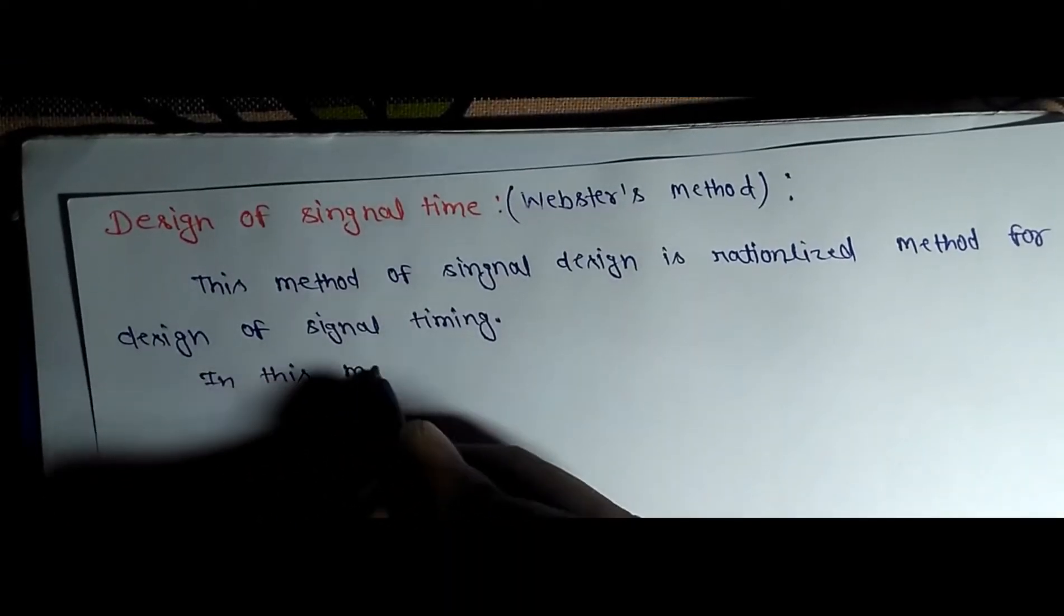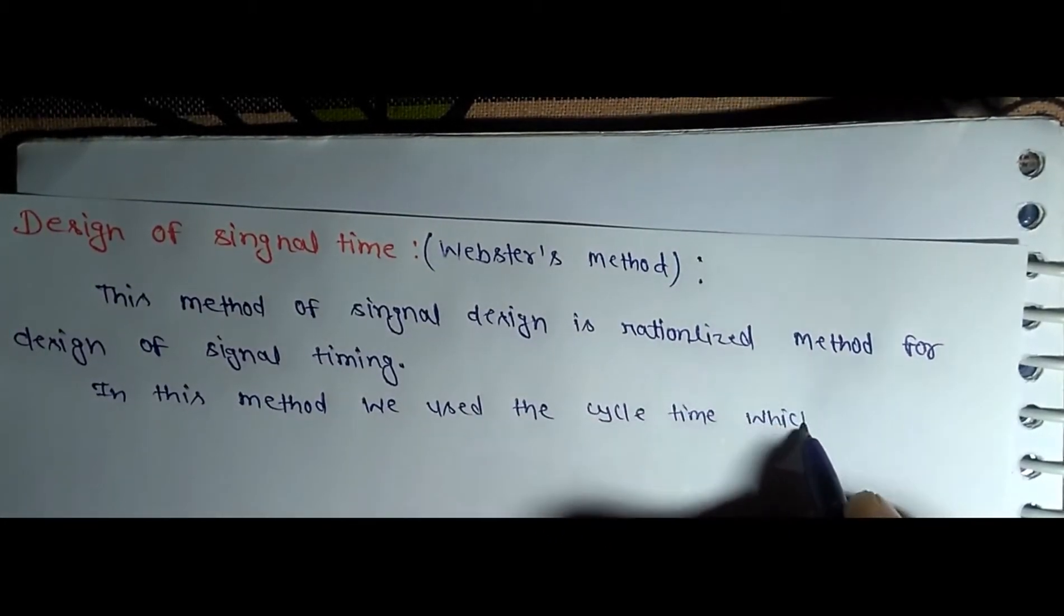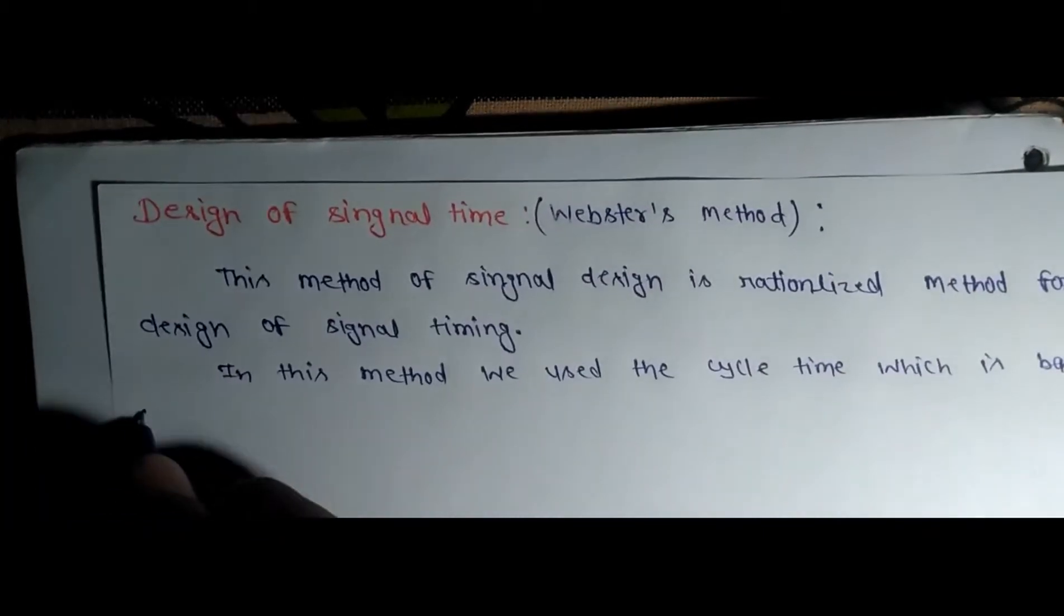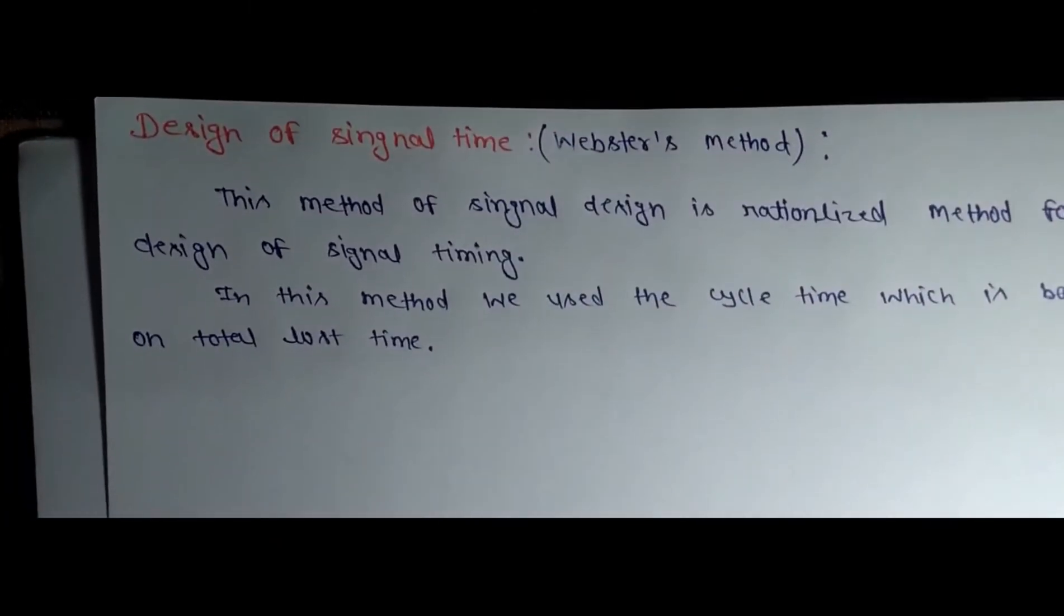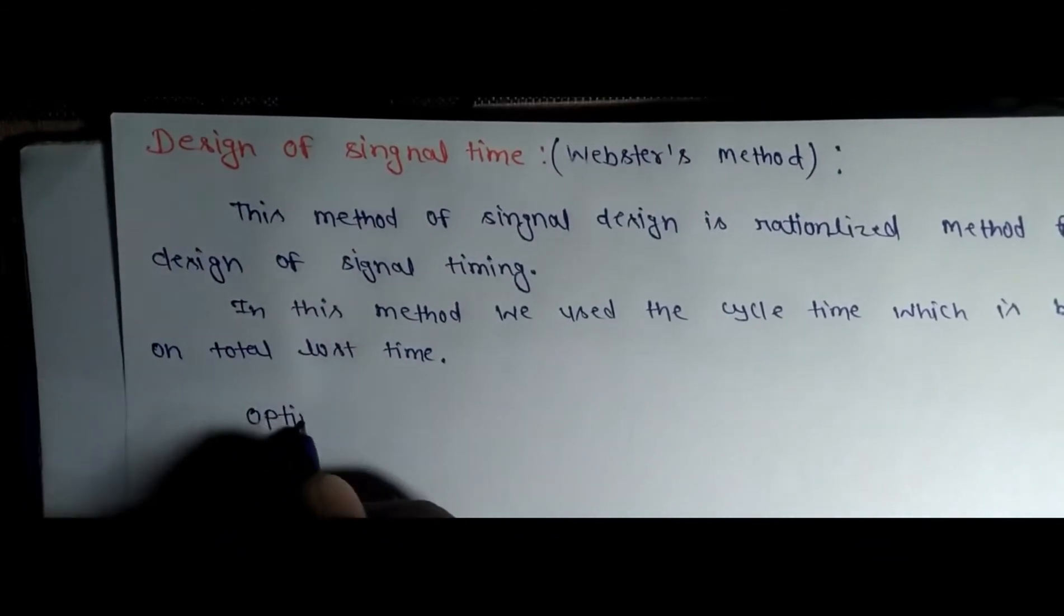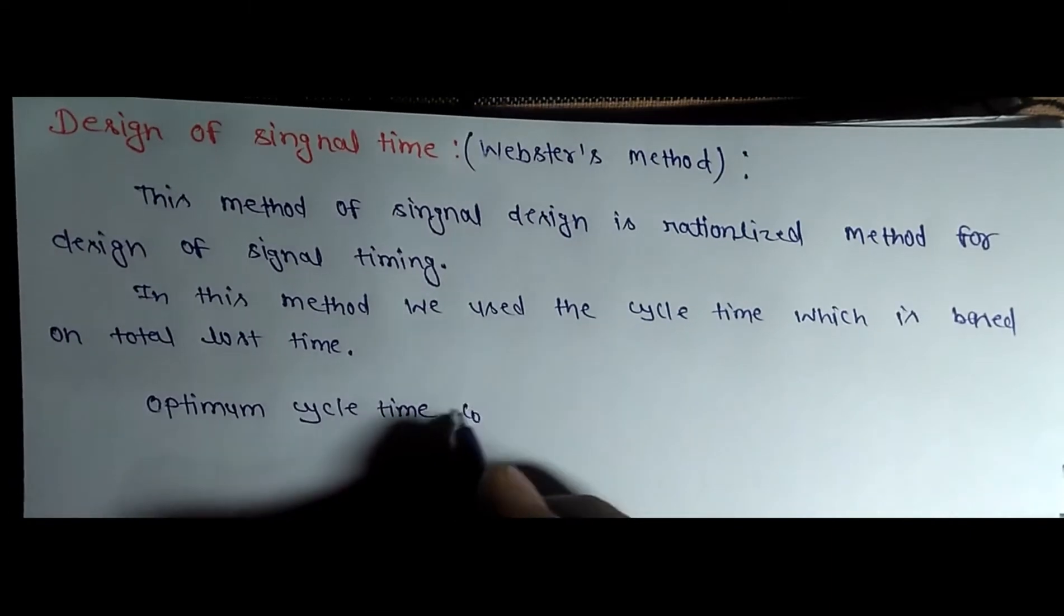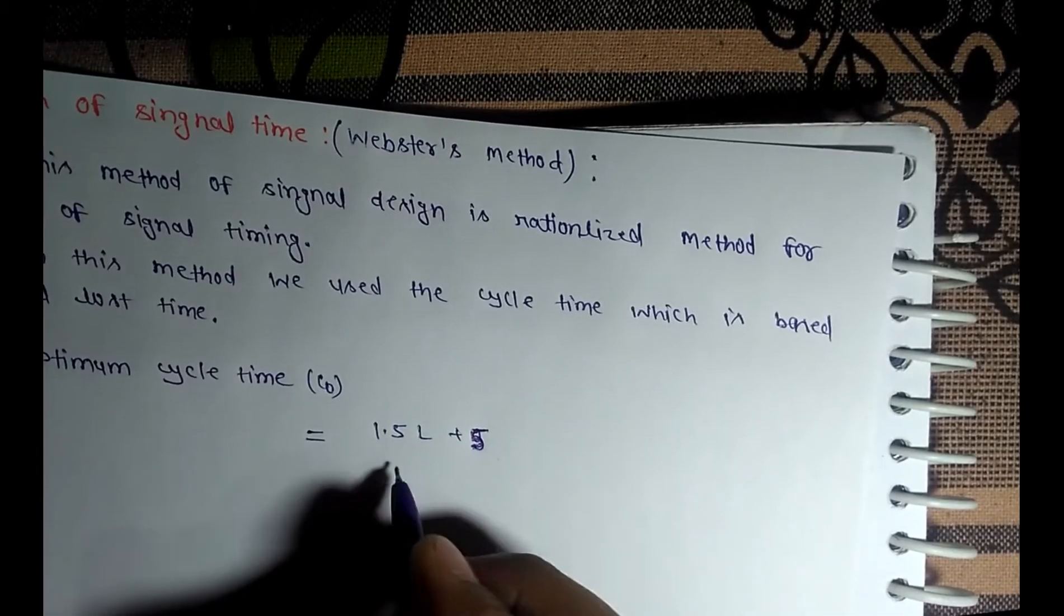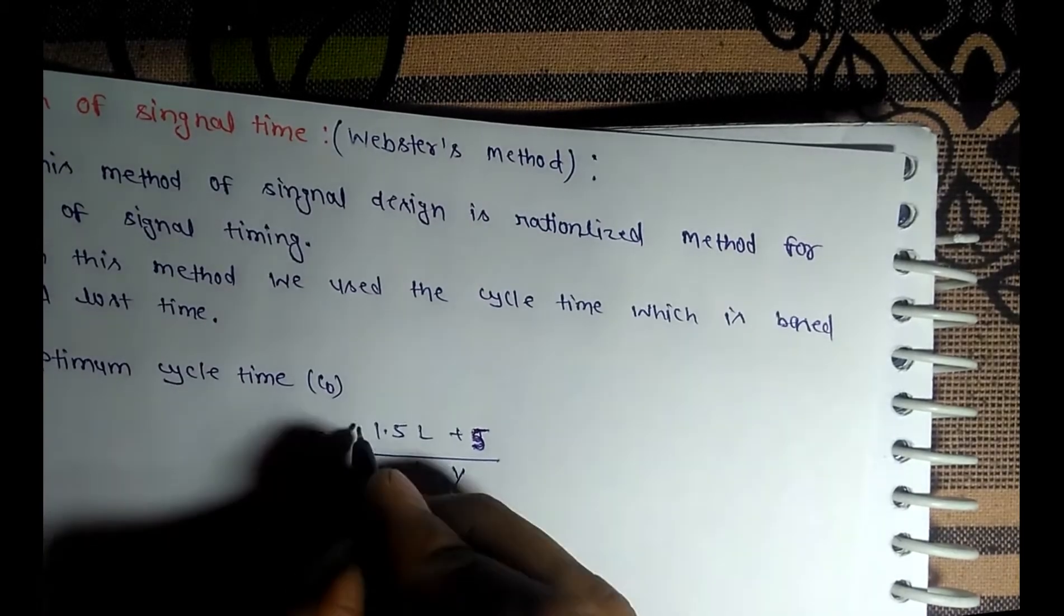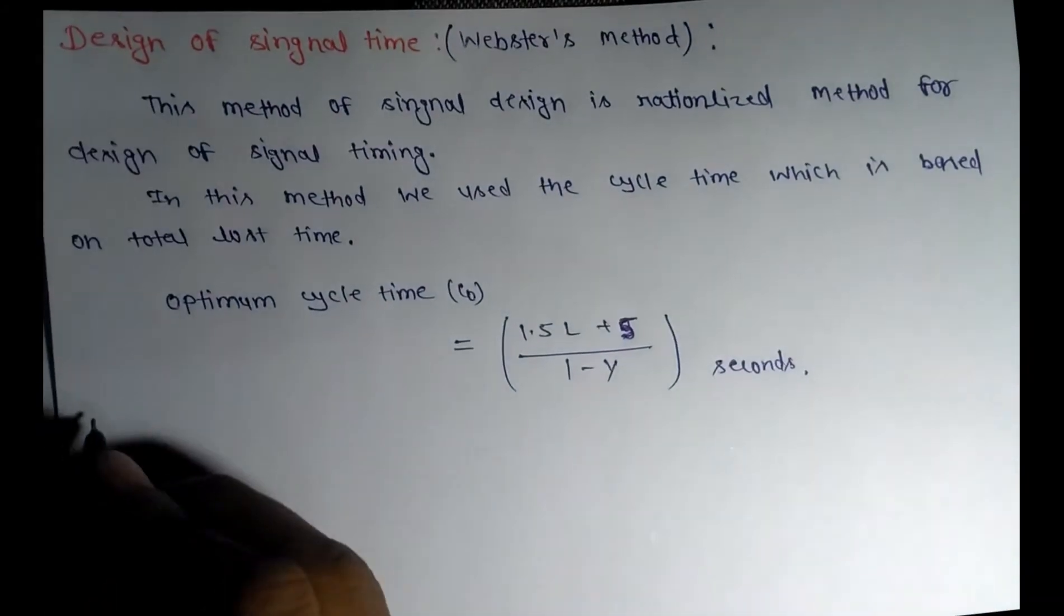In this method, we use the cycle time which is based on total loss time. The formula for optimal cycle time is: Co = (1.5L + 5) / (1 - Y). This answer comes in seconds.